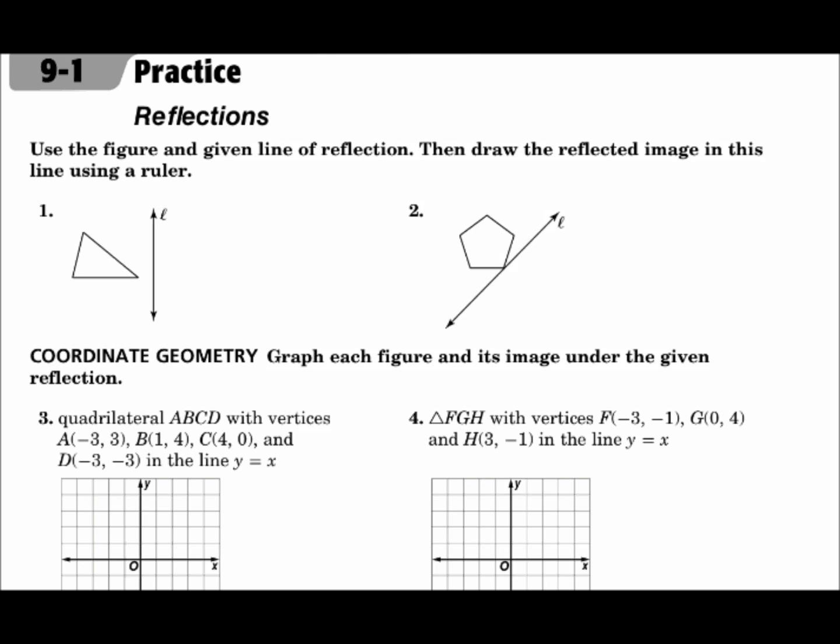When you reflect, you reflect everything on one side of the line of reflection to the other side. So whatever is on one side moves over to the other side, just like a mirror. Use the figure and given line of reflection, then draw the reflected image in this line using a ruler.